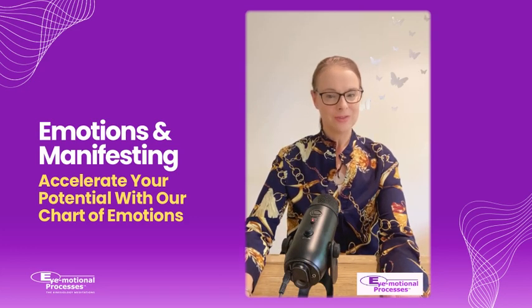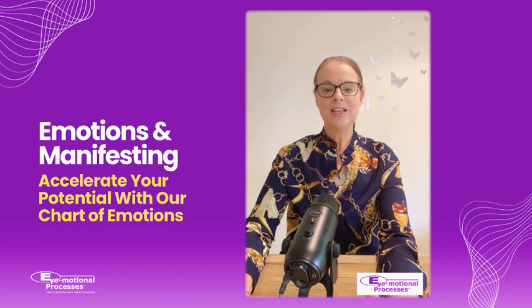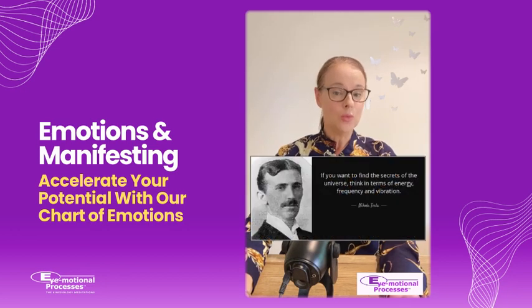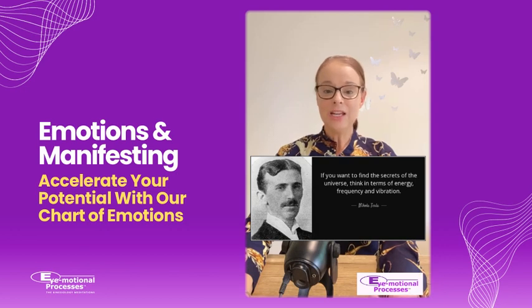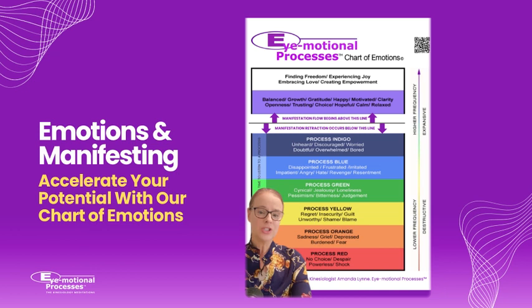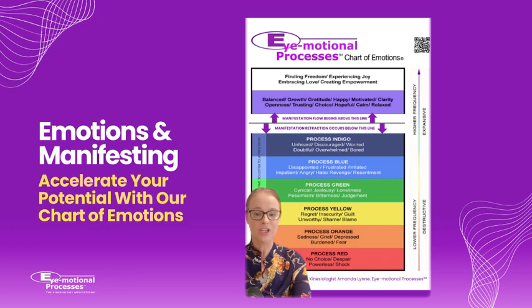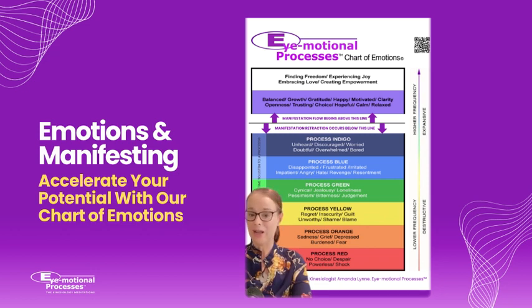The iEmotional Processes chart of emotions, as a law of attraction tool, relies on Nikola Tesla's theory: if you want to find the secrets of the universe, think in terms of energy, frequency and vibration. The chart of emotions invokes these secrets by allowing a person to tap into the energy, frequency and vibration of their own emotions and how they are directly related to the colour bands of each related process on our chart.